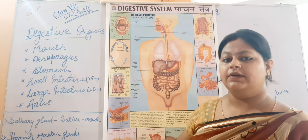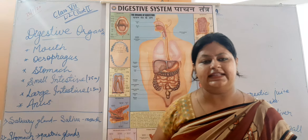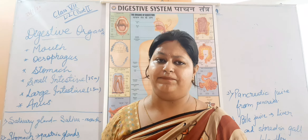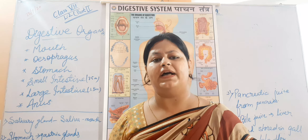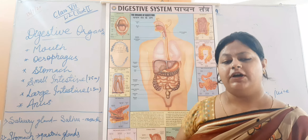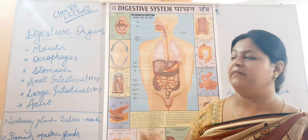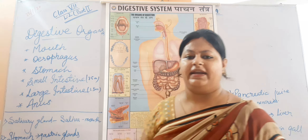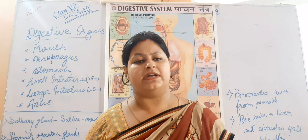First of all, it is very clear that when we take in food, it does not come out from our body in the same form. When we intake food, it breaks down into simple and soluble molecules. For the digestion of food, two things help us: first, the main organs, and second, the supportive organs such as the salivary gland, pancreatic gland, and gastric glands.